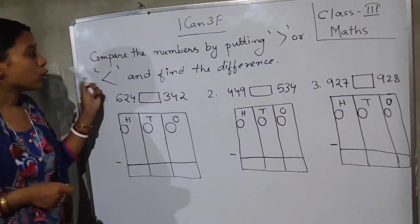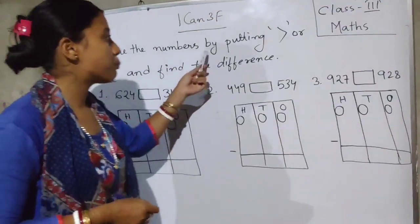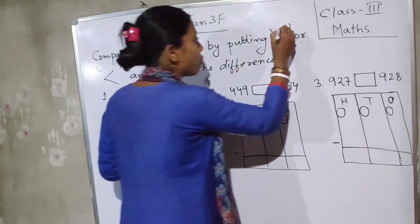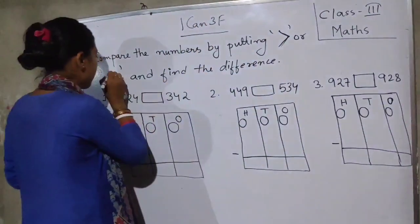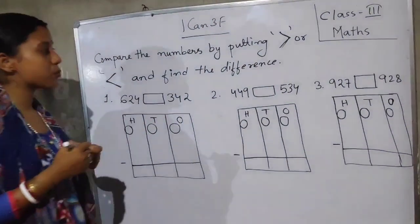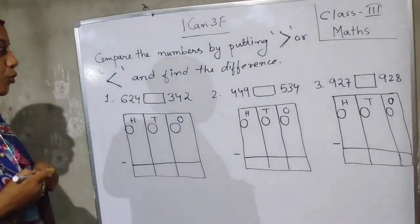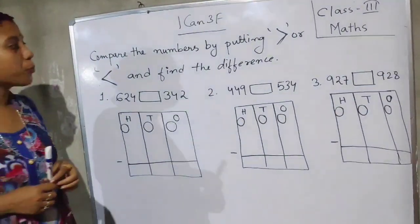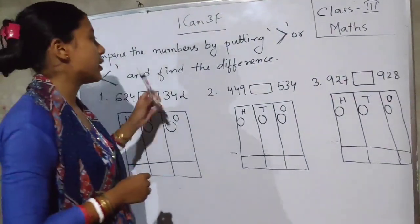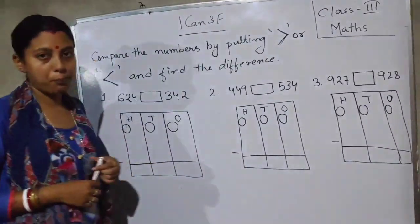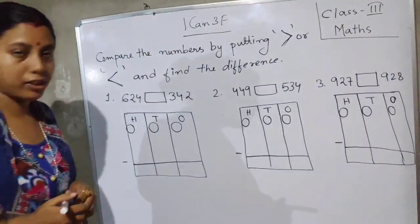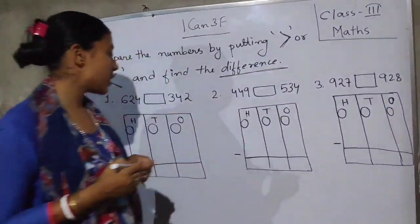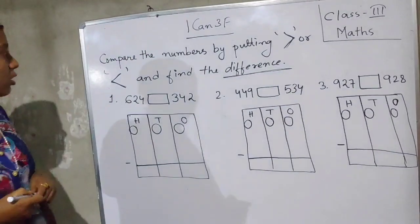What is the question? Compare the numbers by putting the greater and smaller signs — you know these signs — and find the difference. First, you have to put the greater or smaller sign and then subtract. Difference means doing subtraction.